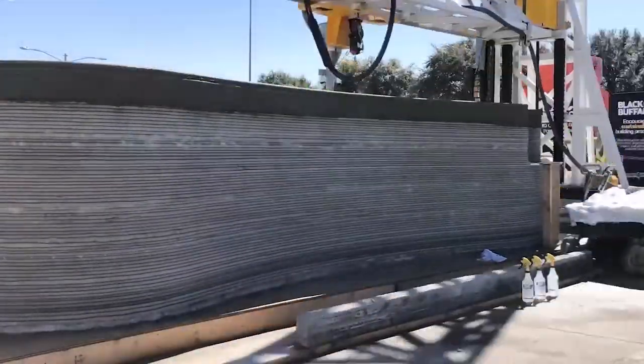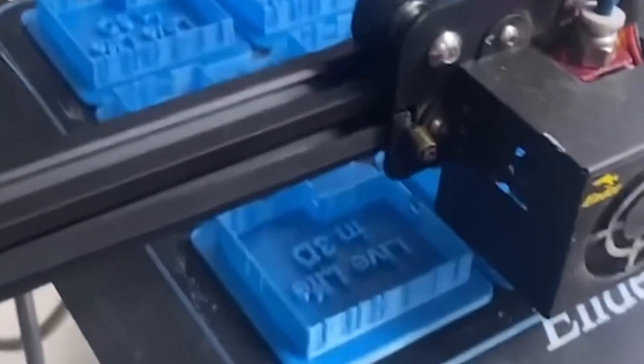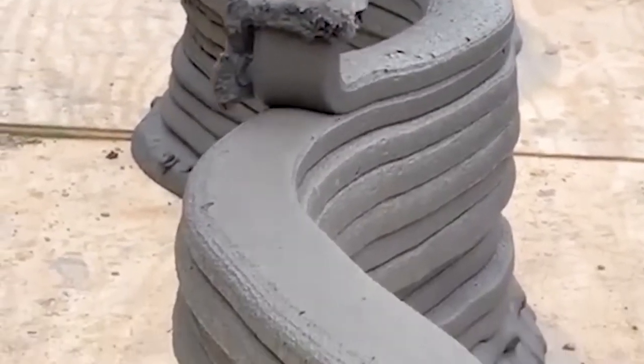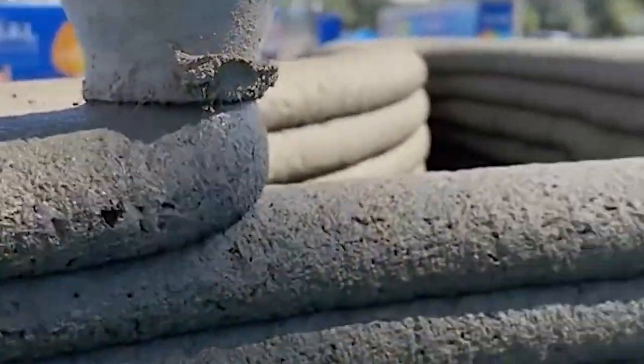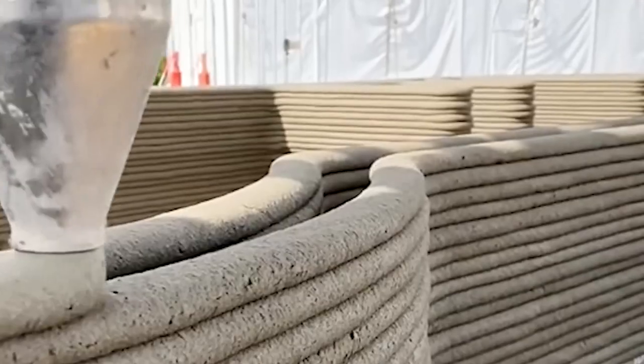An entire two-story house was 3D printed from concrete in Beijing in just 45 days from start to finish. Researchers from Germany even 3D printed a house of glass, currently only available in miniature size. But they were the first to figure out how to 3D print with glass.